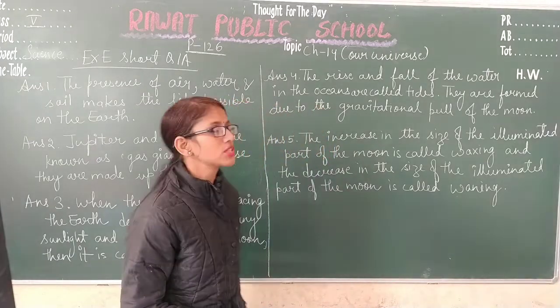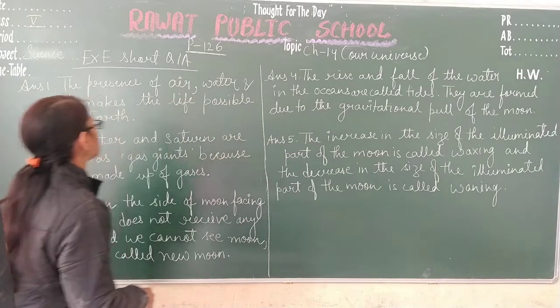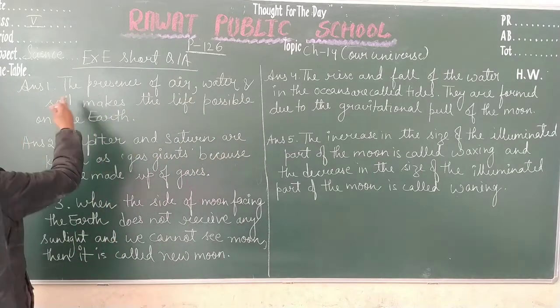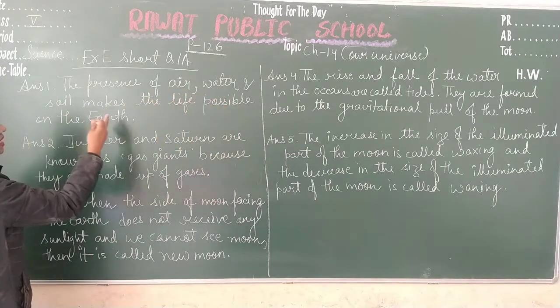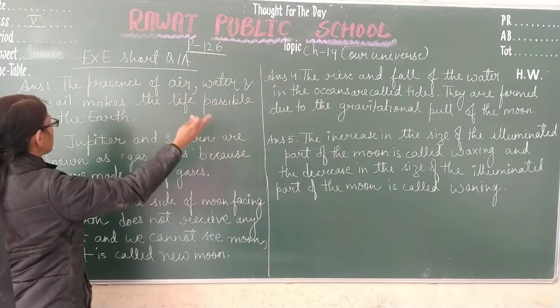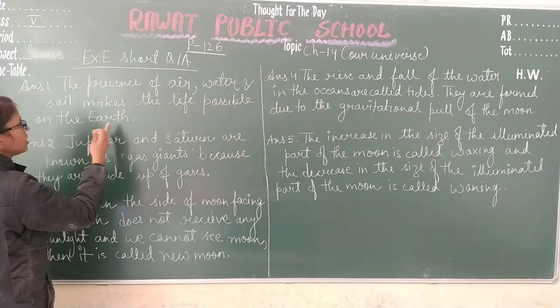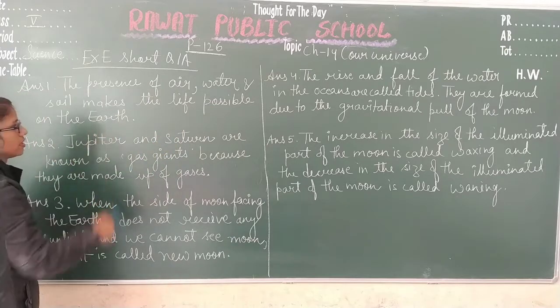The answer of question 1: the presence of air, water, and soil makes life possible on the earth.